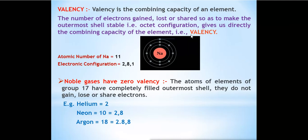Whenever we write the electronic configuration of any element, some elements want to gain electrons, some want to lose electrons, and some share electrons in order to get a stable electronic configuration. The stable configuration can be duplet or octet — duplet only in the case of helium; other elements follow the octet rule, meaning eight electrons in the outermost shell. How many electrons are gained, lost or shared gives us the valency.